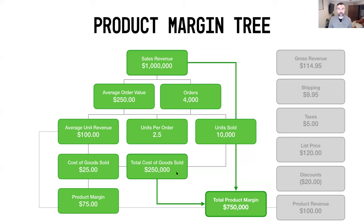What we added into the product margin formula is: take your units sold, multiply by your average cost of goods sold, to arrive at a total of $250,000. The math works so that if you took $1 million in sales revenue and subtracted $250,000 in total cost of goods sold, you'd arrive at the total product margin. This is another way to look at the total product margin formula if you're into the math and equations.